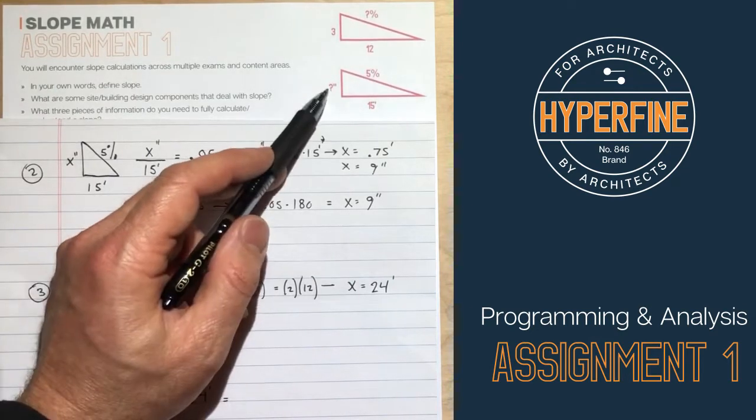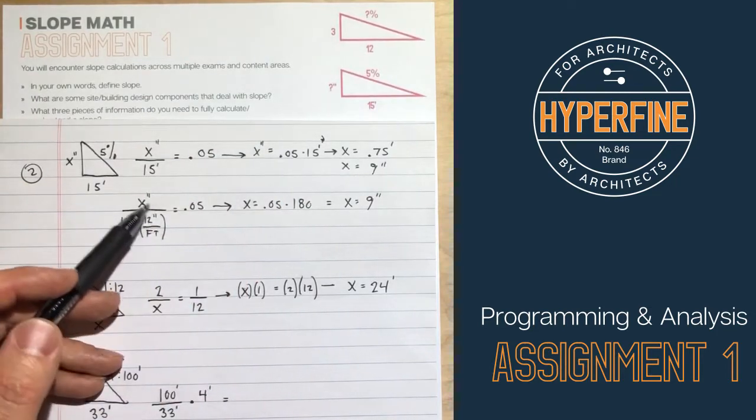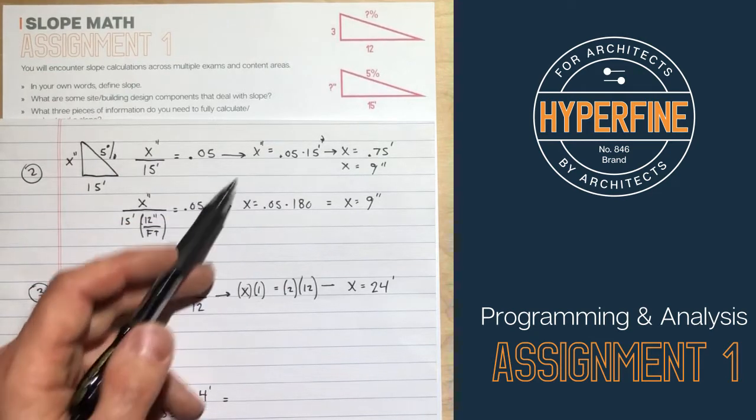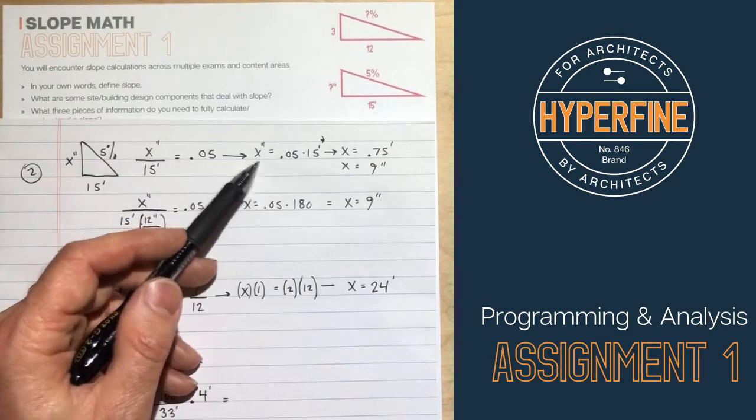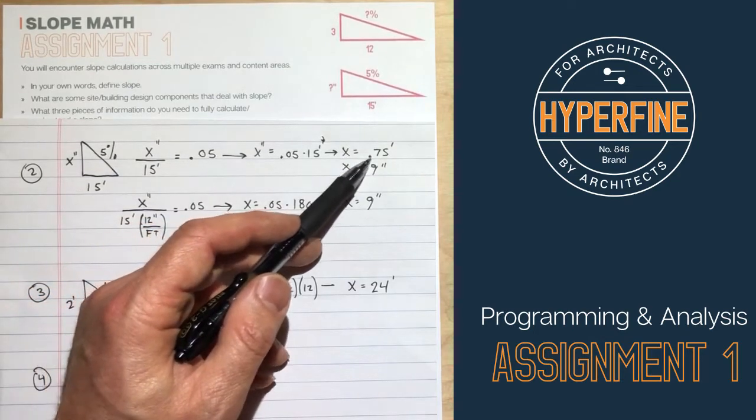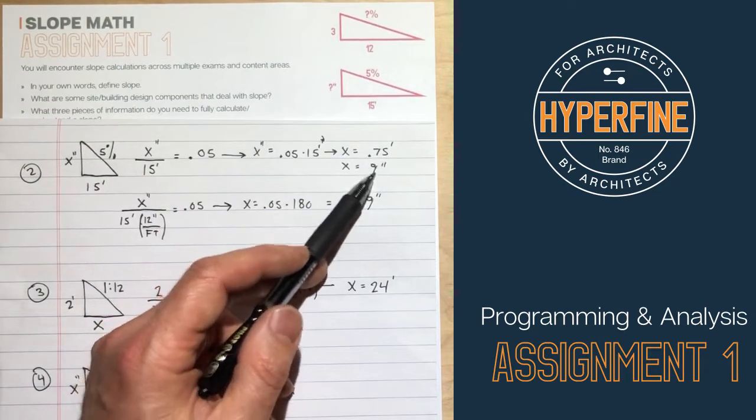So just like we saw before, if we're solving for X, if we're solving for the question mark, we can rewrite that as X over 15 equals 5%. So equals 0.05. We rewrite that as X equals 0.05 times 15 and X equals 0.75 feet. And then you just convert feet to inches. So 0.75 feet is 9 inches.